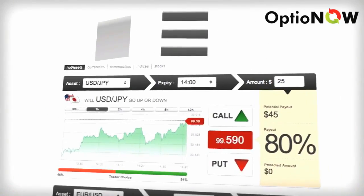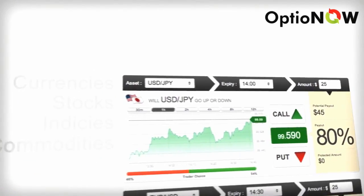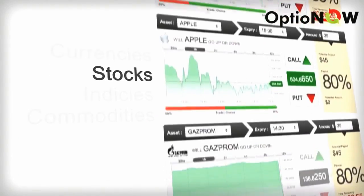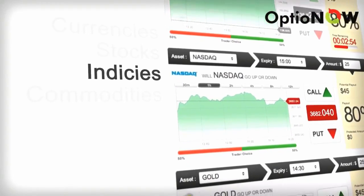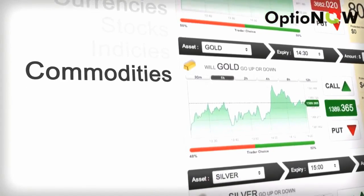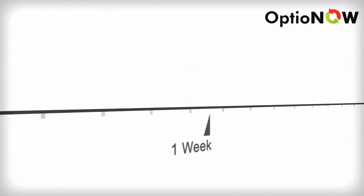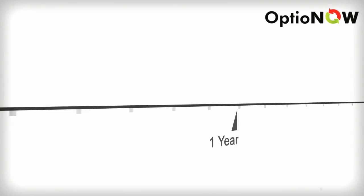We offer the largest range of assets for you to trade including currencies, stocks, indices and commodities, and expiries from 30 seconds to end of day, one week or even a year.